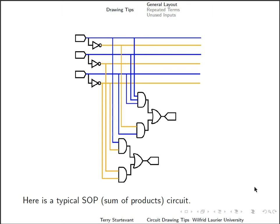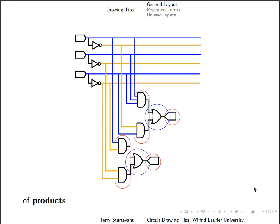So here for example is a typical sum of products circuit. It has three inputs and two outputs. Each output is a sum, shown by the OR gate, of products, shown by the AND gates, of the inputs and their inverses.